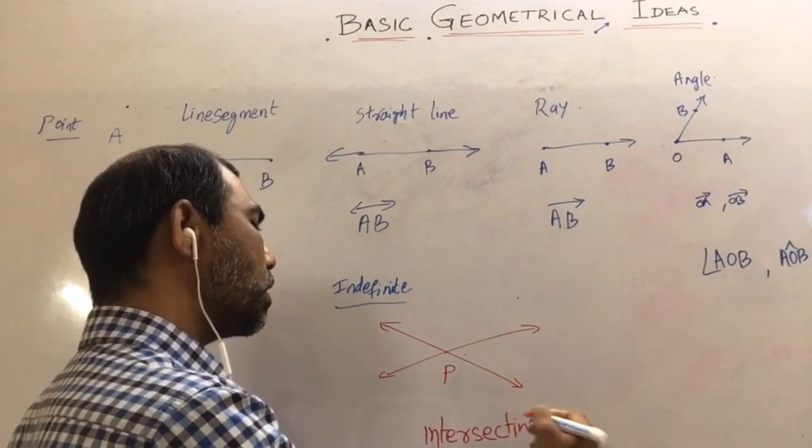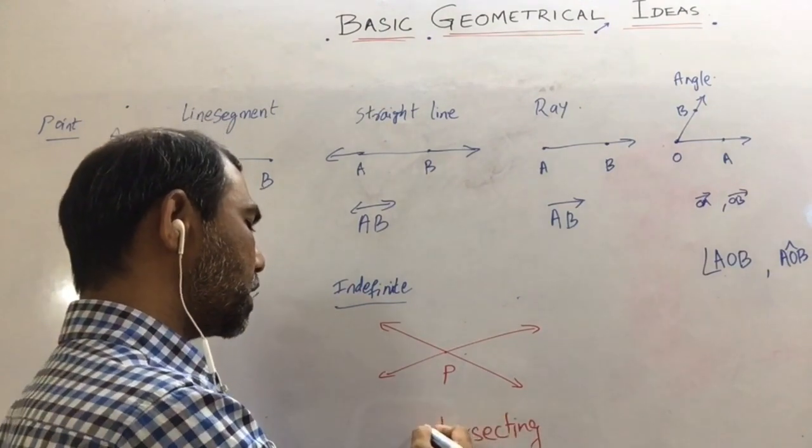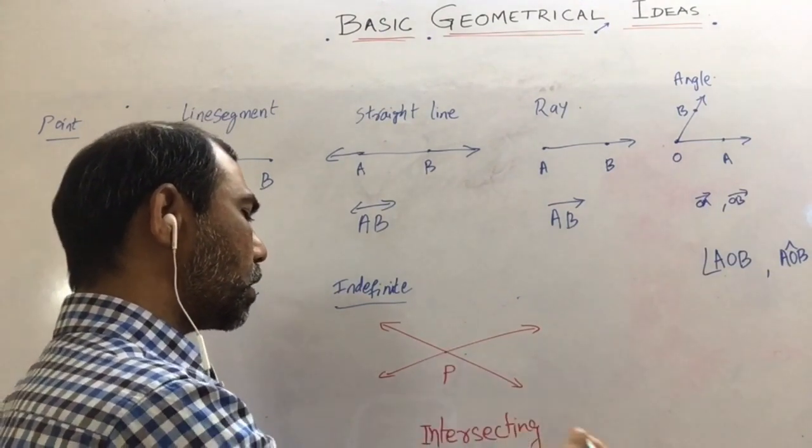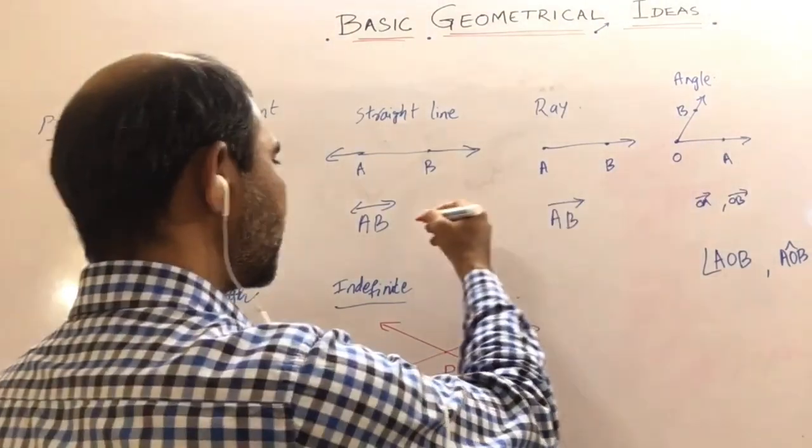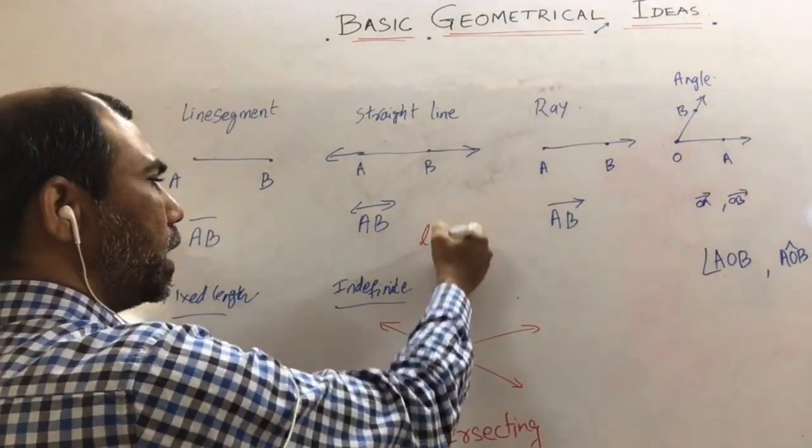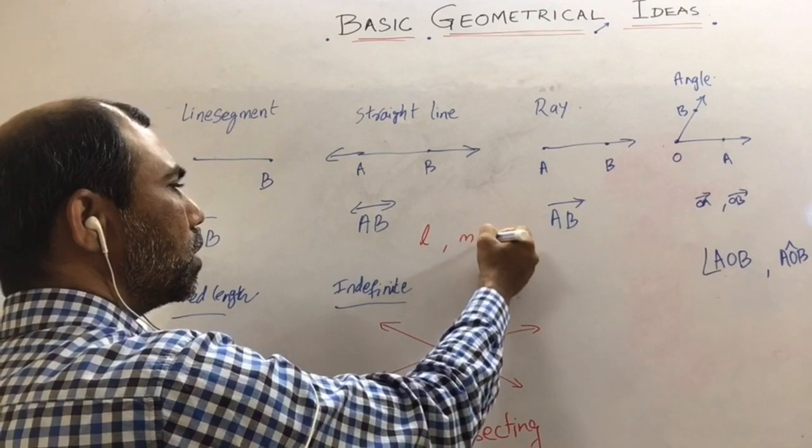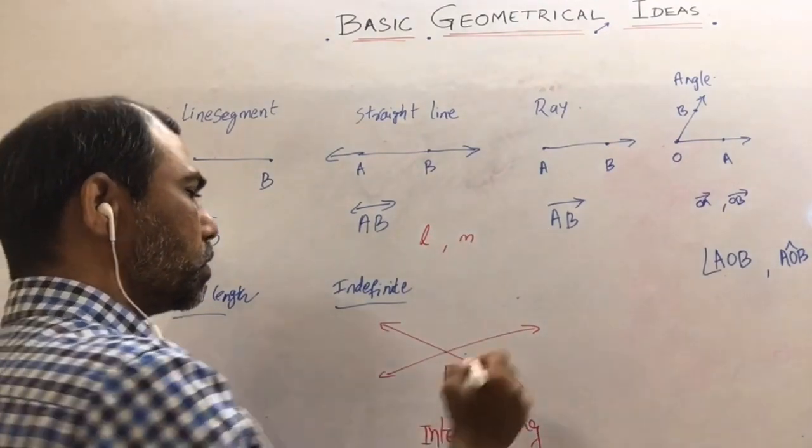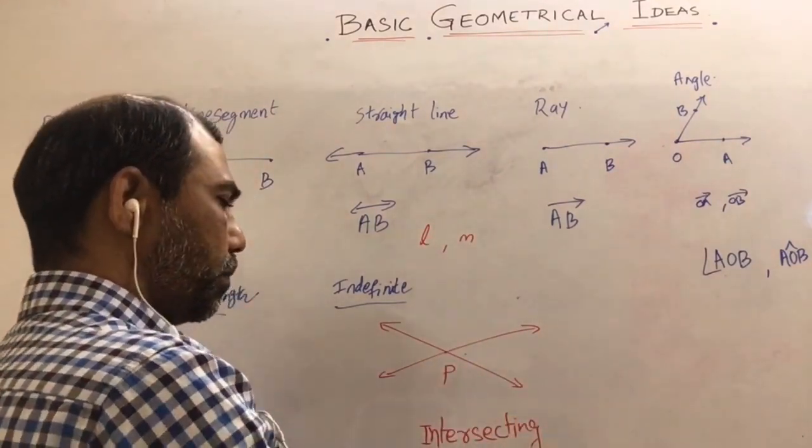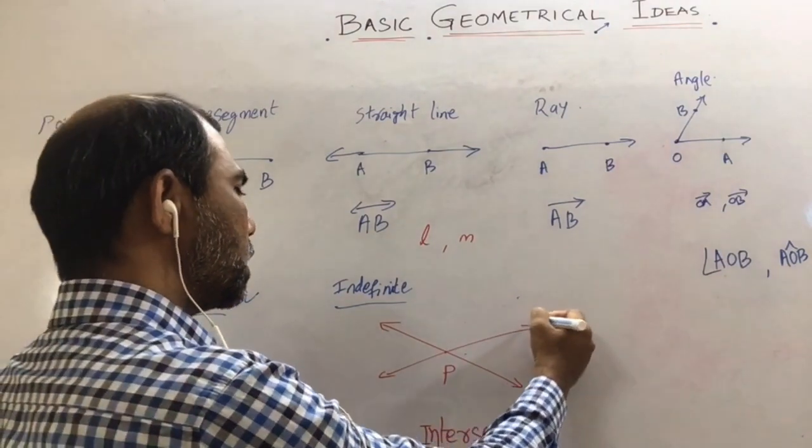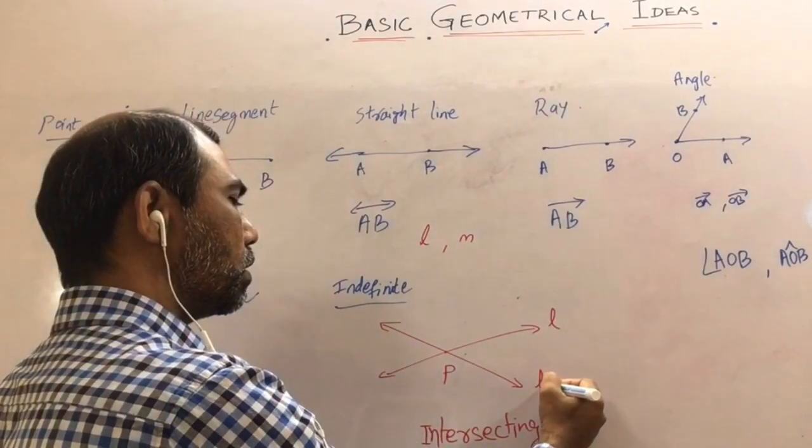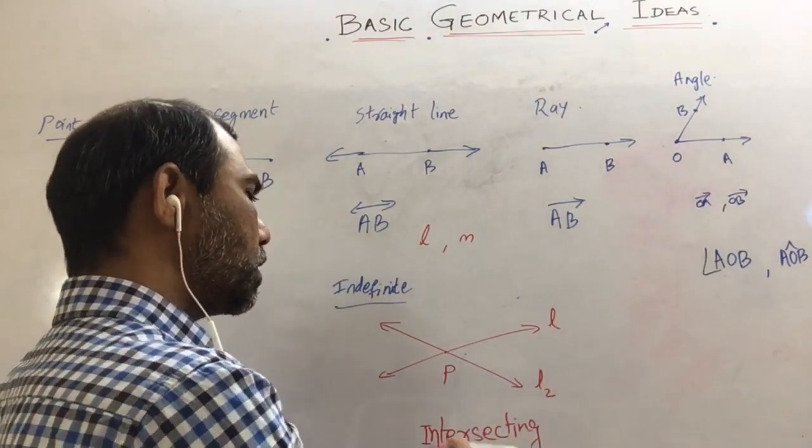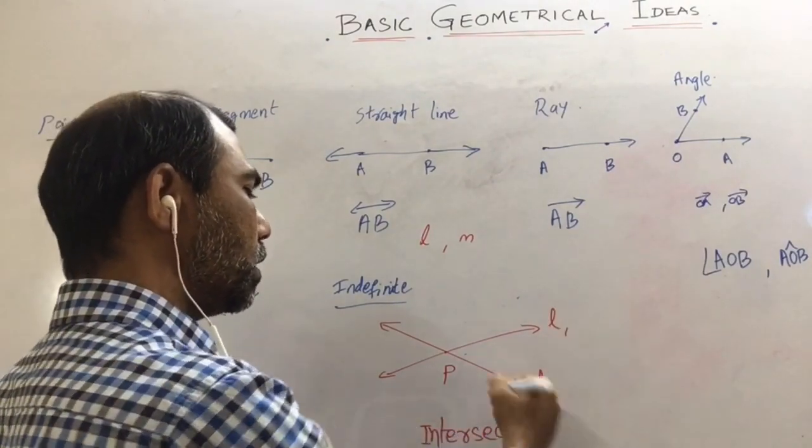If the two lines are meeting at one single point, the lines are called intersecting lines. These lines can be represented by small letters L, M also. If this is line L1 or L2 or L and M, these L1 and L2 are intersecting lines.